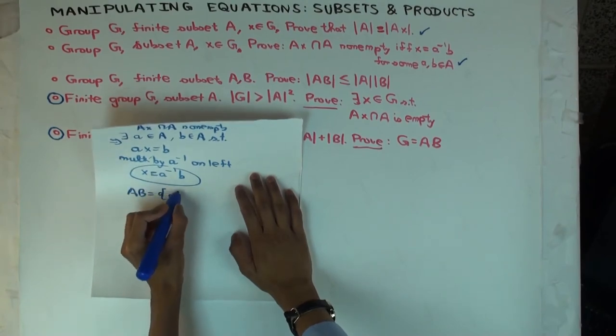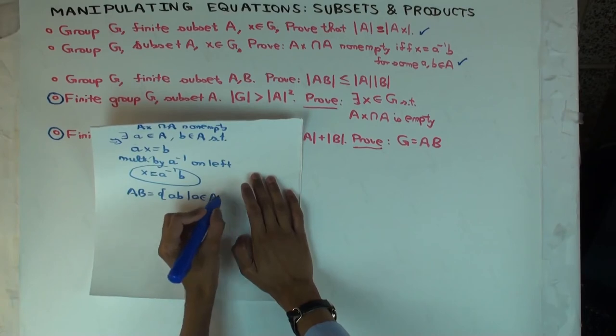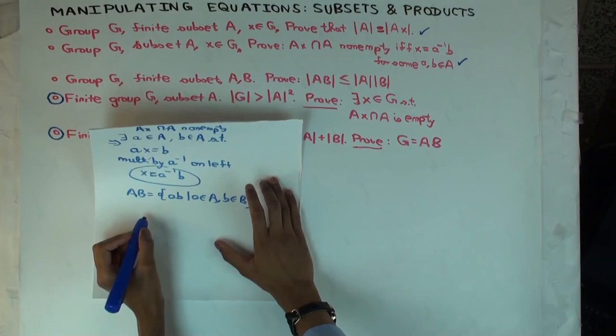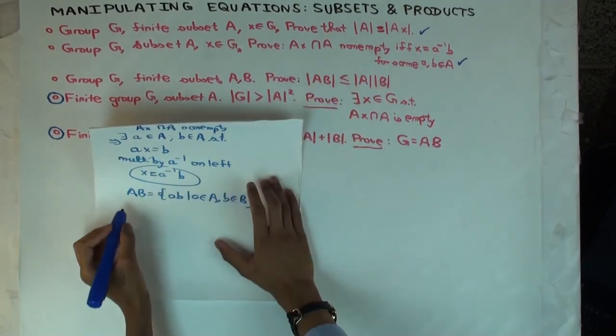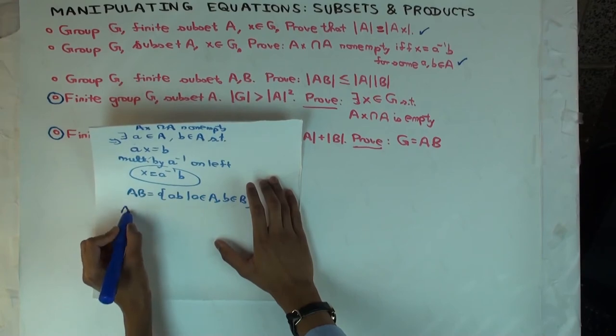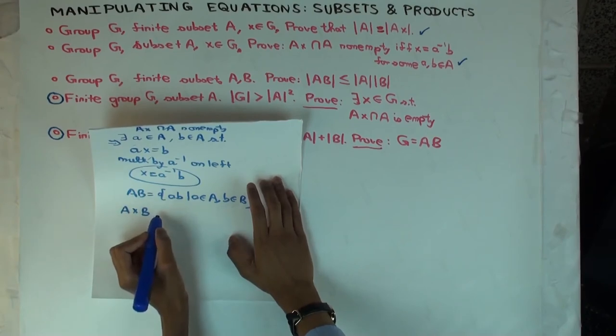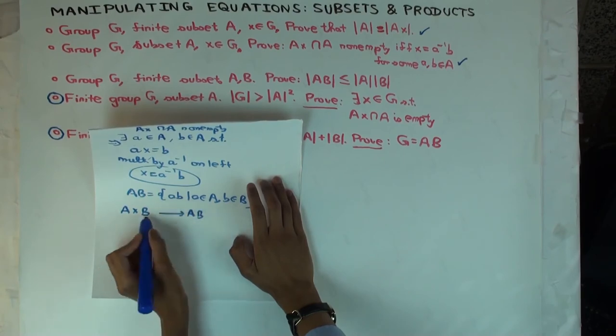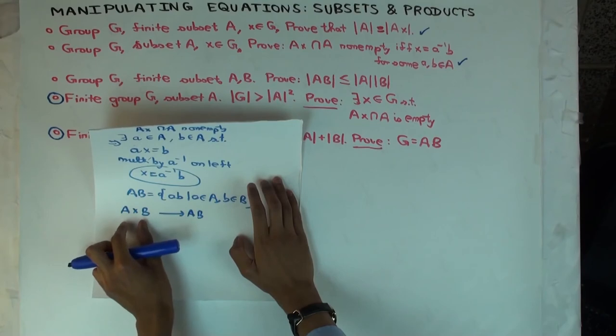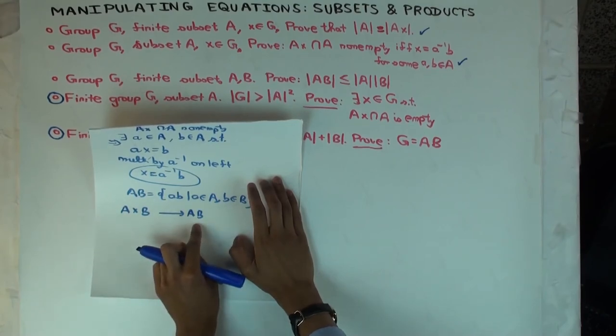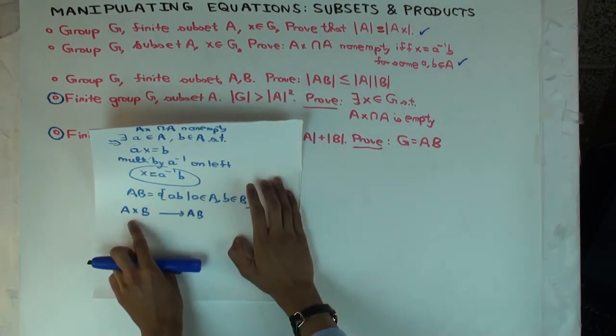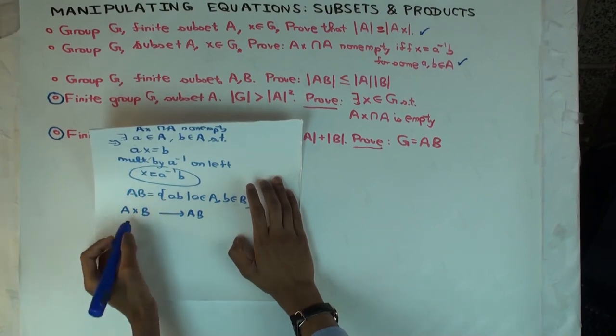Little a times little b for all a and b in A and B. Yes, it's just the set of all products. Now, what's a set whose size is size of A times size of B? You can take the Cartesian product, A cross B. That has size exactly size A times size B. Now, what I'm going to do is I want to think of a map from the Cartesian product of A and B to AB. What's the natural map from A cross B to AB?